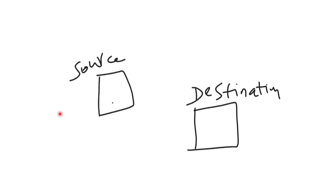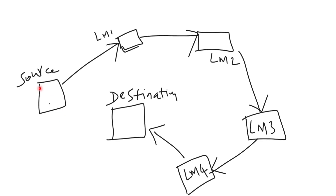You hire the taxi driver and instruct him: go to landmark 1 — the driver goes there. Once reached, you give the next instruction: go to landmark 2, then landmark 3, then landmark 4, then the destination. The taxi driver has no clue what the final output you are looking for is until each location is reached. He is not applying any thinking — whatever instruction he receives, he just executes it.